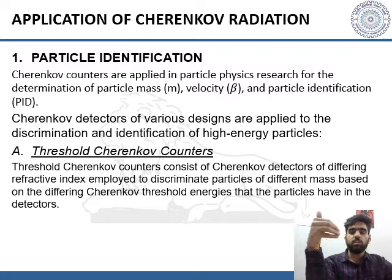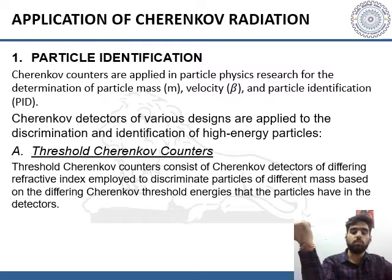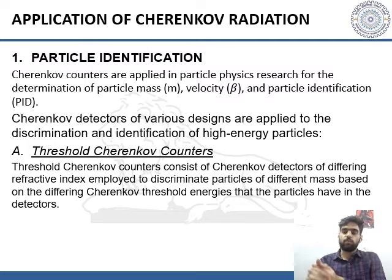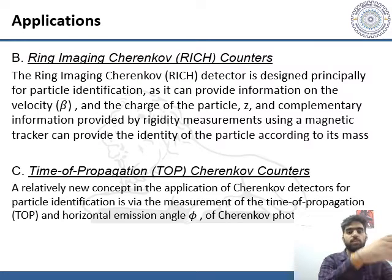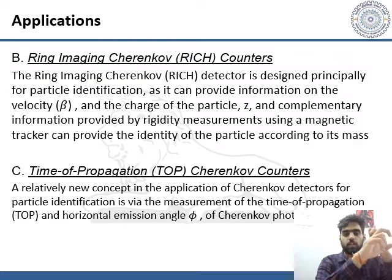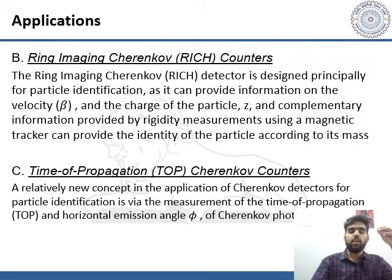Different particles have different Cherenkov threshold energies, so we can distinguish particles by the Cherenkov radiation they emit for different types of refractive index. The Ring Imaging Cherenkov counter, or RICH, is designed principally for particle identification, as it can provide information on the velocity and charge of the particle. Complementary information provided by rigidity measurement using magnetic tracking provides the identity of the particle according to its mass.